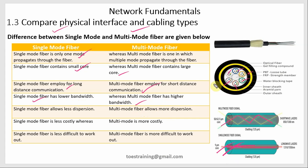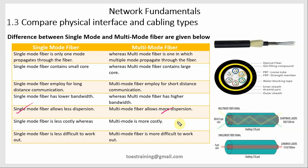Multi-mode fiber has higher bandwidth because of its larger number of fiber cores. Single-mode fiber allows less dispersion, while multi-mode fiber allows more dispersion — meaning more light technology can be carried. Single-mode fiber is less costly, where multi-mode fiber is more costly due to its number of cores. Single-mode fiber is less difficult to work with, while multi-mode fiber is more difficult.